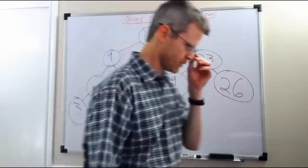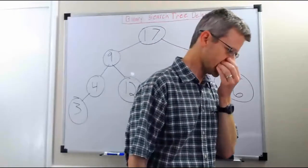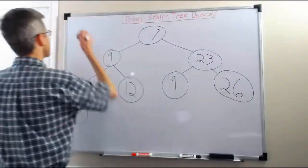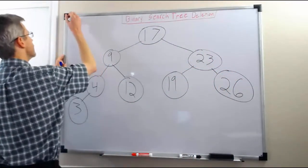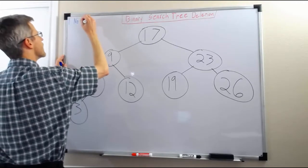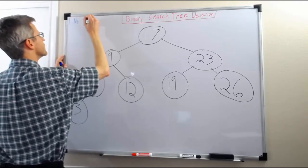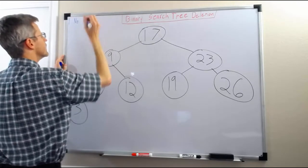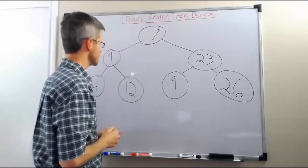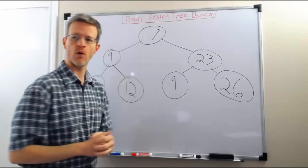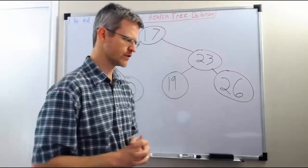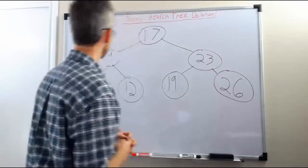So there are three cases here. The first case is that we're deleting a node that does not have a child. This case is simple. In this case, there's no one to promote up into the place of the node.